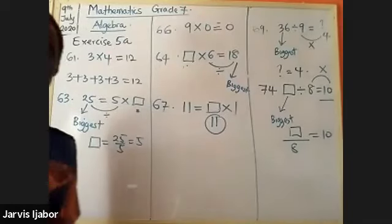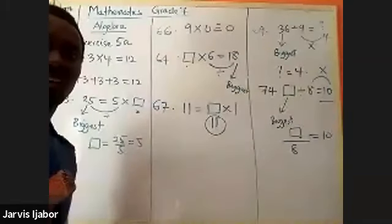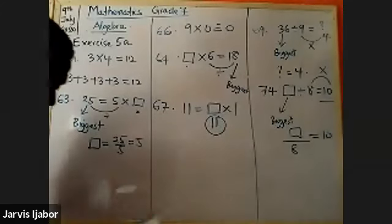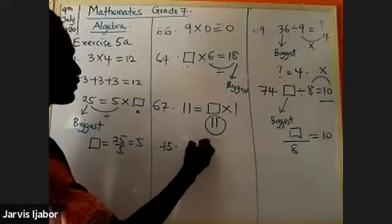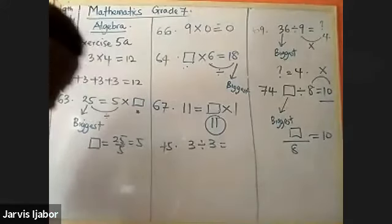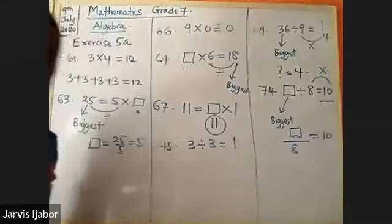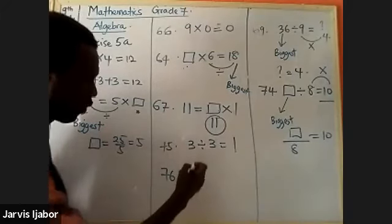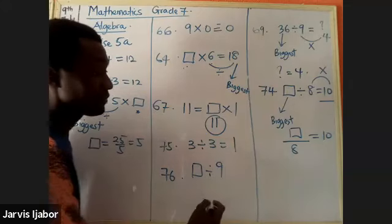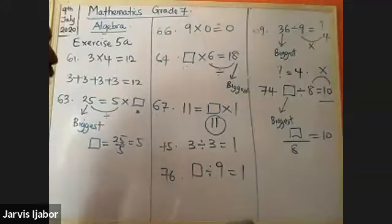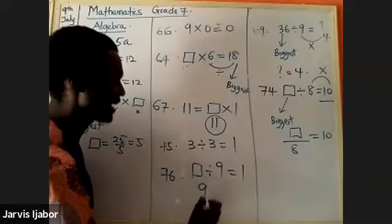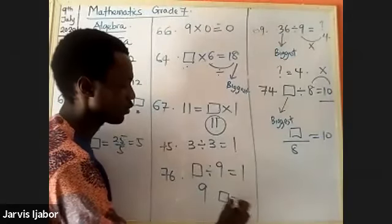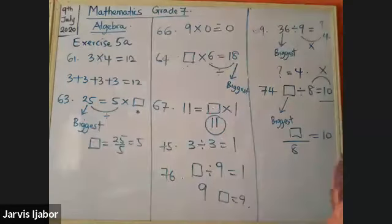Question seventy-five: when you divide two identical numbers the answer is one. Question seventy-six: if a number divided by another gives one, that divisor equals the dividend. So box divided by nine equals one means box is nine — a number divided by itself gives one. That's the end of this exercise.